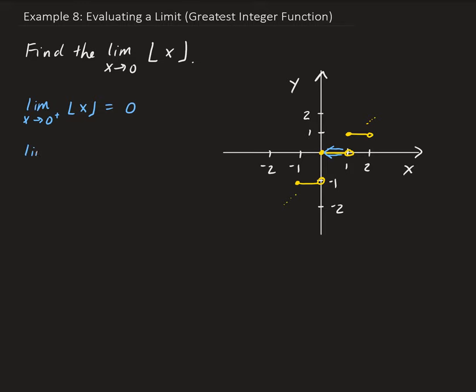And the limit as x approaches 0 from the left, so that means it's approaching 0 from this side. So it's approaching, stays on that line, so it's constant, so it's going to be negative 1.